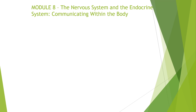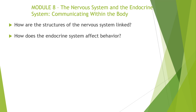The two questions we're going to answer in this module: one, how are the structures of the nervous system linked — all those different nervous systems and the various structures within them. And then the second question is how does the endocrine system affect behavior? The endocrine system deals with emotions and eating behavior and sleeping behavior, and all of those definitely have an effect on our behavior.